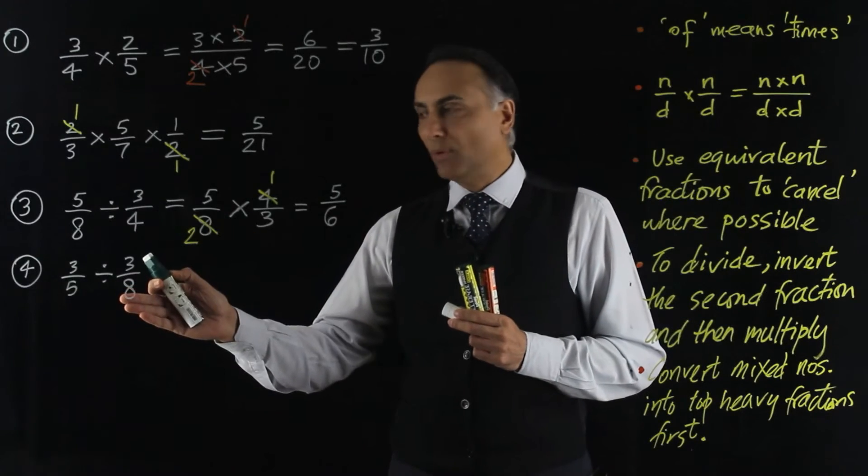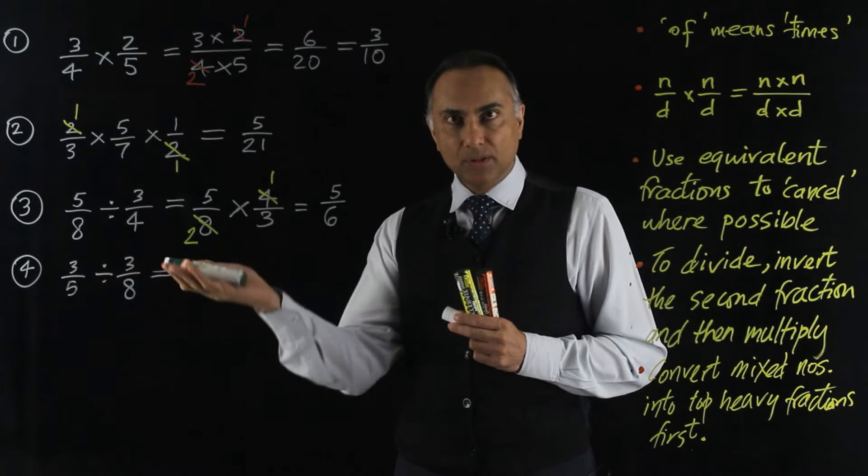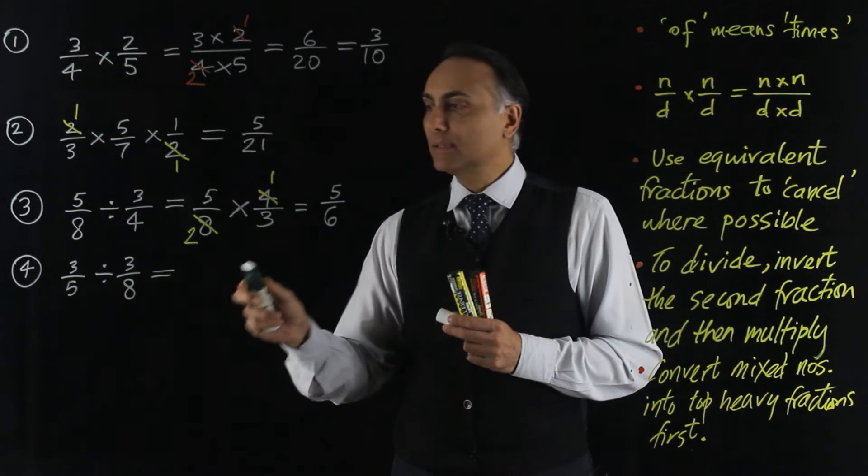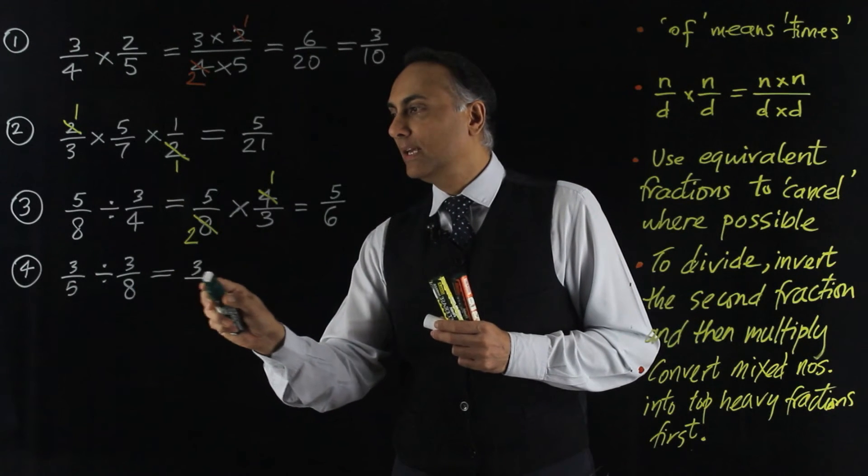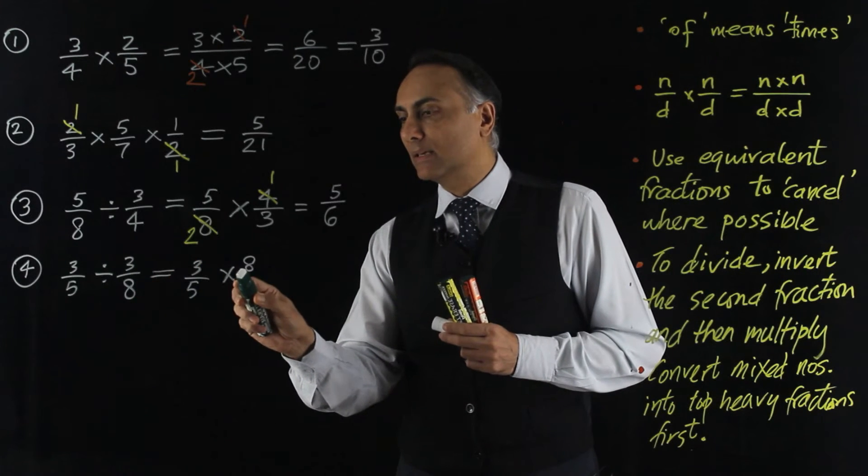Let's look now at example 4. So to divide by a vulgar fraction, you invert the vulgar fraction and multiply by it. So I have 3 fifths multiplied by, not 3 eighths, but 8 thirds.